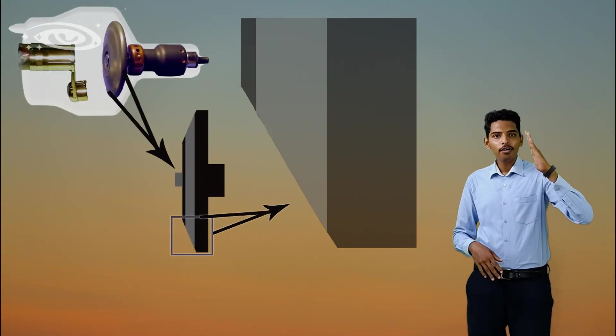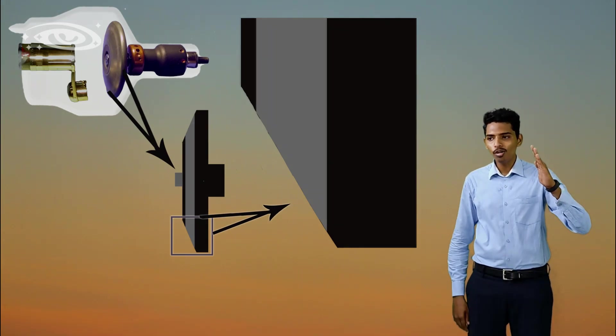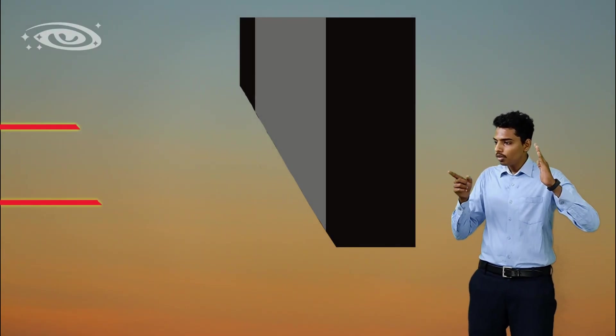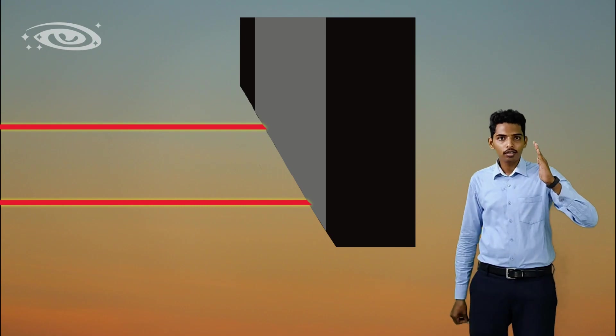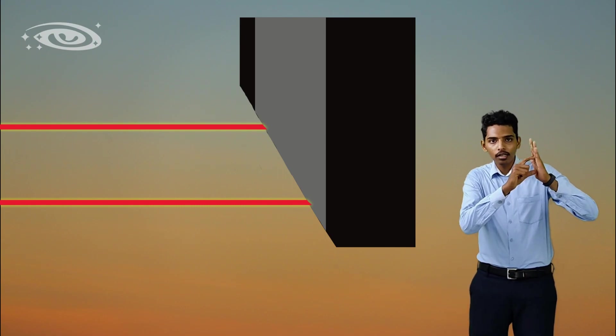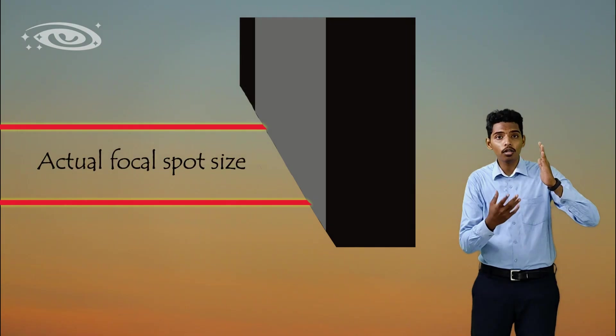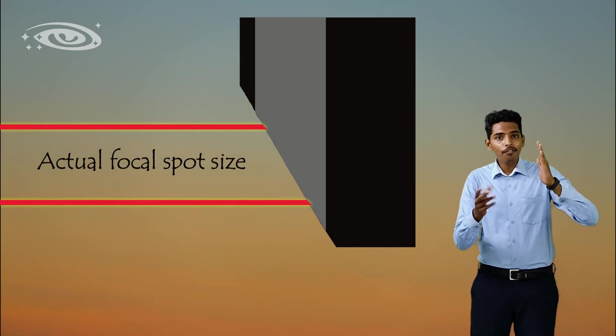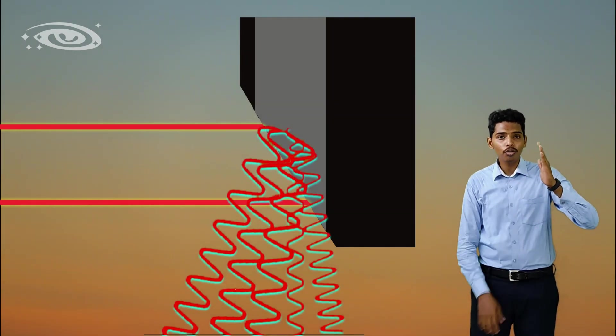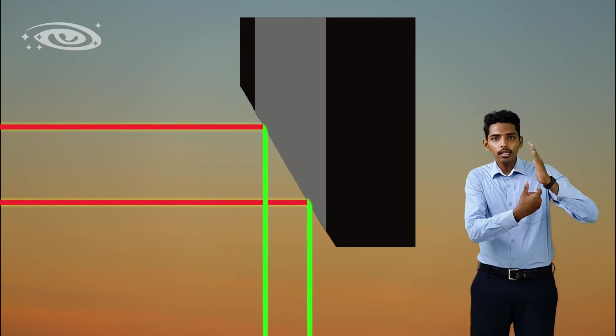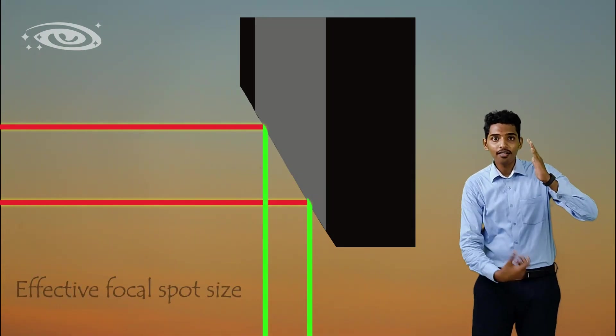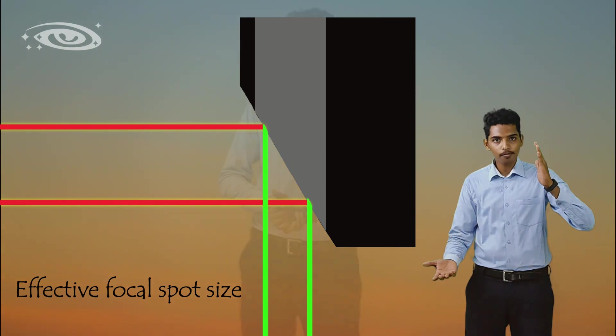So here I have an anode. Assume this is anode. So here we have electron beam, it is going to hit the target. The electron beam which is hitting at the target, that is called actual focal spot size. After hitting the target, x-rays are going to produce, right? So that x-ray beam size is called as effective focal spot size.